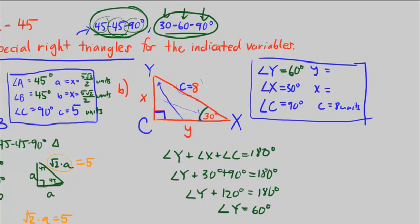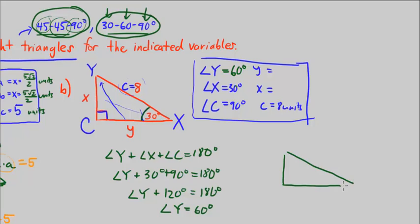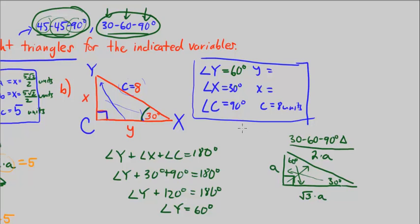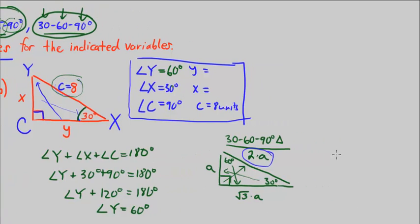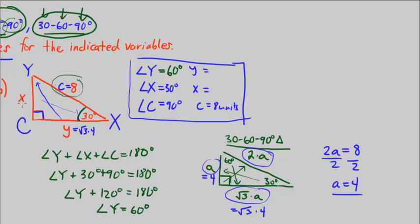For a 30-60-90 degree triangle, the side opposite 30° is A, the side opposite 60° is √3 · A, and the hypotenuse opposite the right angle is 2A. We're given the hypotenuse is 8, so 2A = 8, giving A = 4. That means side x = 4 units and side y = √3 · 4 = 4√3 units.